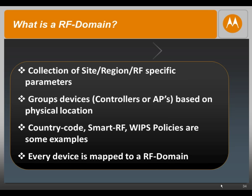A quick overview of what an RF domain is. An RF domain essentially is a collection of site-specific configuration parameters. It gives the admin the capability to group devices based on a physical location. Common examples for configuration parameters used in the RF domain are country code, smart RF, web policies, etc., which are site-specific. The important point to note here is every single device has to be mapped to an RF domain.